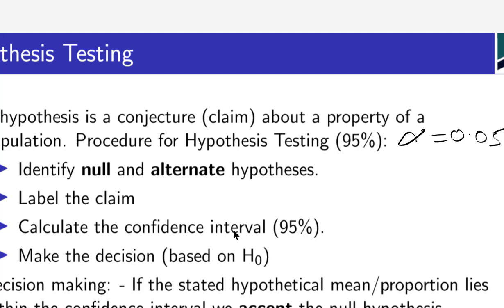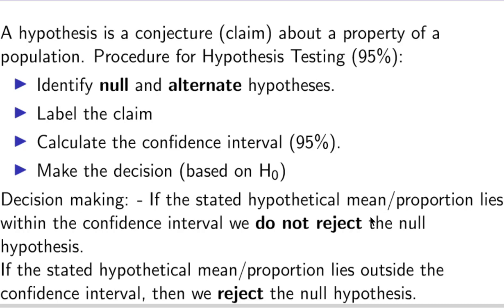Label the claim, calculate the confidence interval — we did that in our previous lesson, so it's important you already know how to calculate confidence intervals — and make the decision. The decision is based on H0, the null hypothesis. If the stated hypothetical mean or proportion from the null hypothesis lies within the confidence interval, between the lower and upper bounds, then we do not reject the null hypothesis.